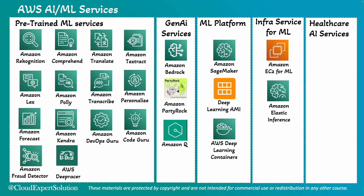Amazon Elastic Inference is an inference accelerator that you can attach to any Amazon EC2 or SageMaker instance. It reduces the cost of running deep learning inference, such as custom-built real-time object detection models for autonomous vehicles. AWS Inferentia provides a custom-built machine learning inferencing chip for high-performance and cost-effective inference — specific EC2 instance chips you can use for any ML model building.